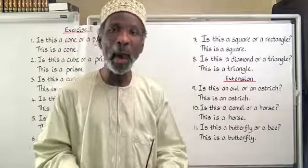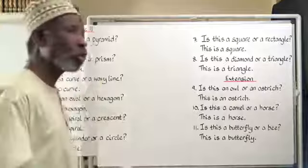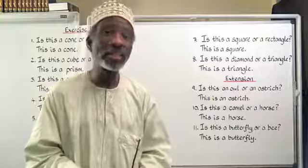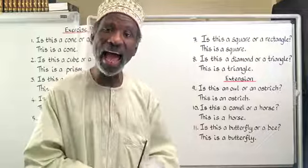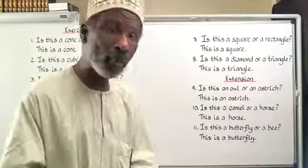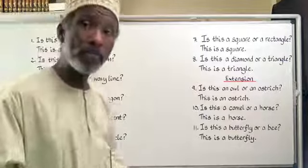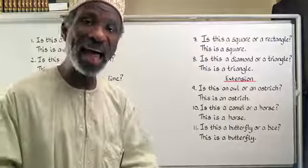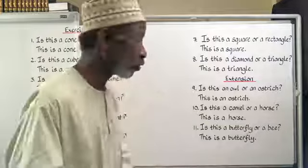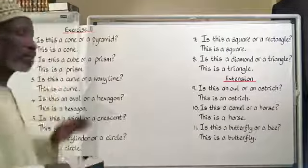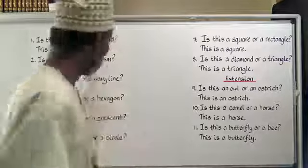Number 2: is this a cube or a prism? A cube is مُكَعَّبٌ, a prism is مَوْشُورٌ. هَلْ هَذَا مُكَعَّبٌ أَمْ مَوْشُورٌ. This is a prism — هَذَا مَوْشُورٌ.